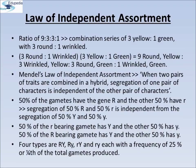Law of Independent Assortment. In the dihybrid cross, the phenotypes round yellow, wrinkled yellow, round green, and wrinkled green appeared in the ratio of 9 : 3 : 3 : 1. Such a ratio was observed for several pairs of characters that Mendel studied. The ratio of 9 : 3 : 3 : 1 can be derived as a combination of 3 yellow : 1 green with 3 round : 1 wrinkled, written as (3 round : 1 wrinkled)(3 yellow : 1 green) = 9 round yellow : 3 wrinkled yellow : 3 round green : 1 wrinkled green.